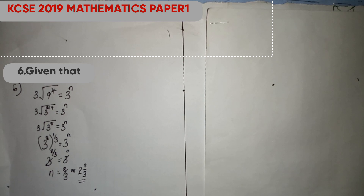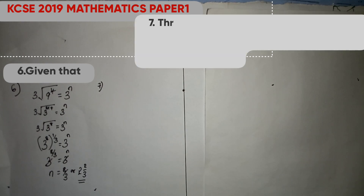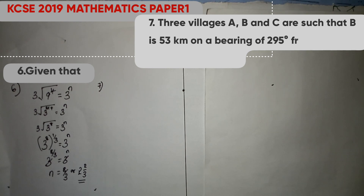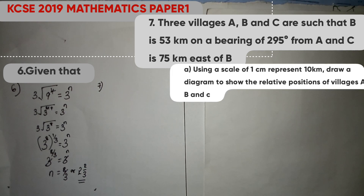Let us go now to question seven, which says: three villages A, B and C are such that B is 53 km on the bearing of 295 degrees from A, and C is 75 km east of B. Using a scale of 1 cm to represent 10 km, draw a diagram to show the relative positions of villages A, B and C. Let us first sketch. You are told B is 53 km on the bearing of 295 degrees from A.